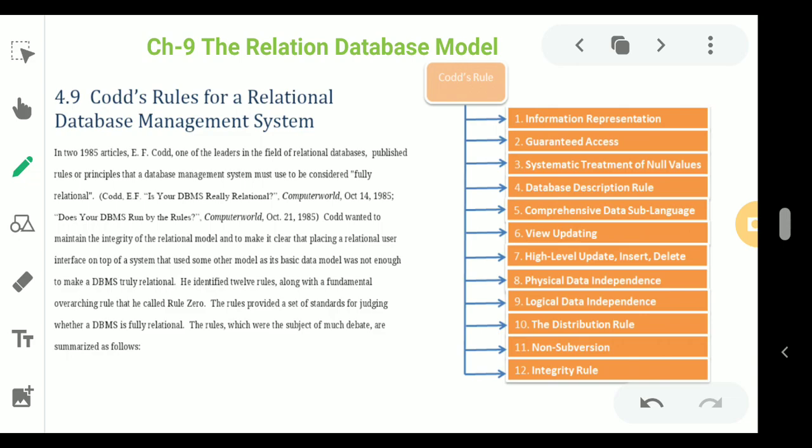Rule 4 is the Dynamic Online Catalog Based on the Relational Model. A relational database must provide access to its structure through the same tools used to access the data. This can be accomplished by storing the structure definitions in special system tables — capturing column names, field names, constraints, and keys properly.